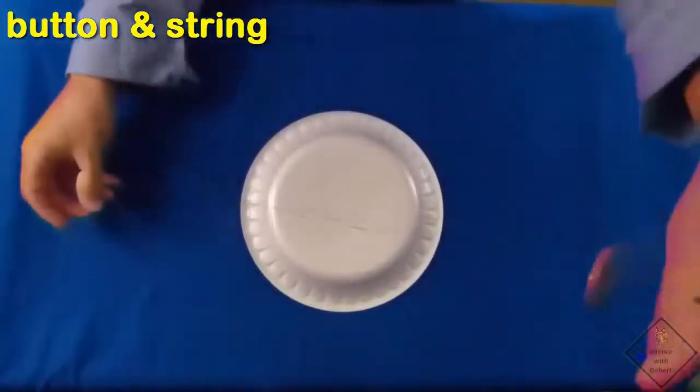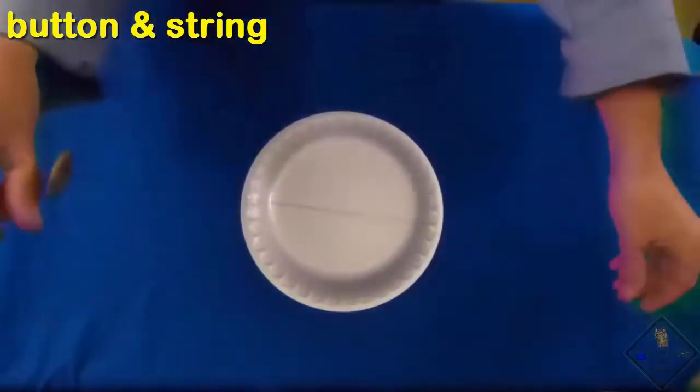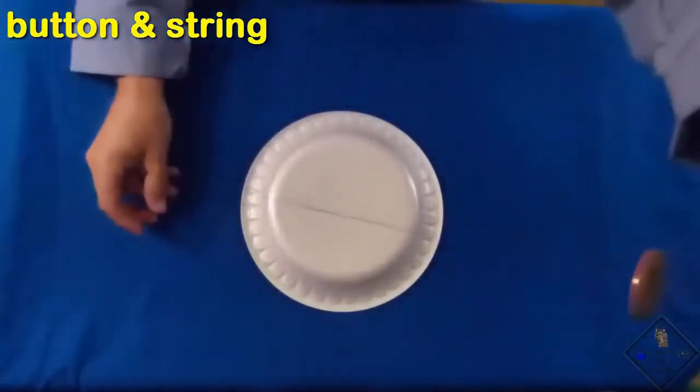With the knot behind his thumb, he holds the string to allow the button to slide back and forth between his thumbs.